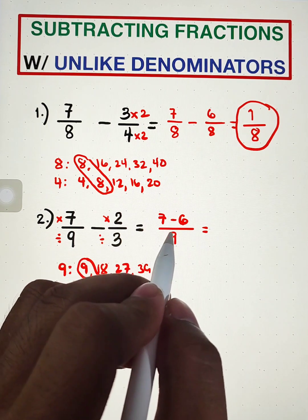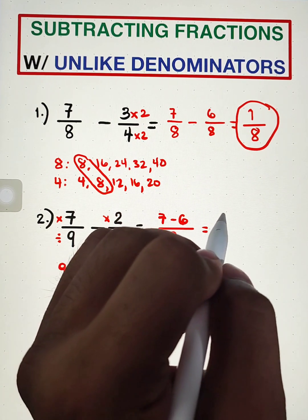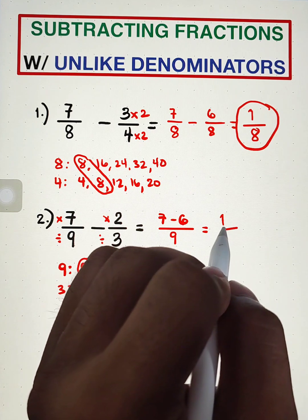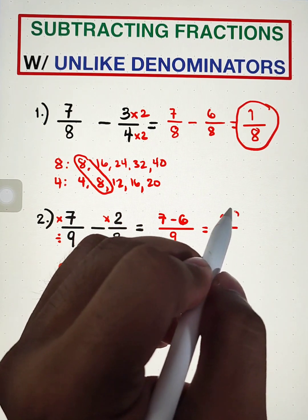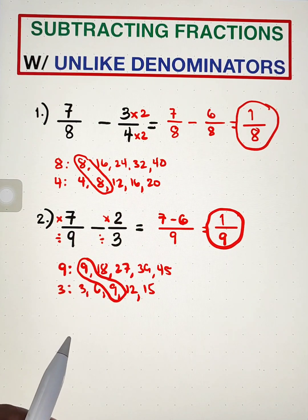And subtract the numerator, 7 minus 6 is 1, over 9. And as you can see, this is now the final answer.